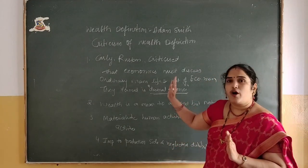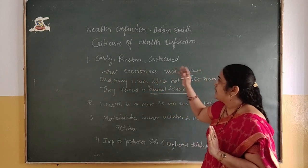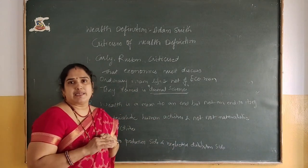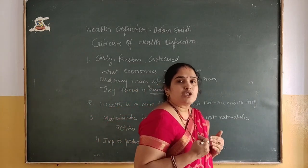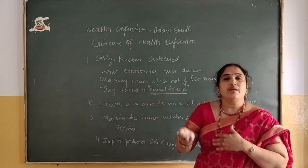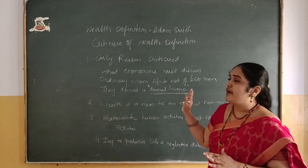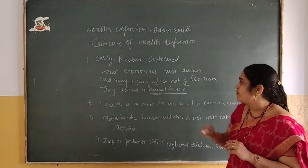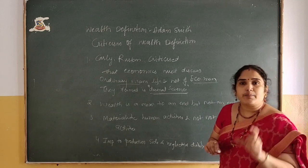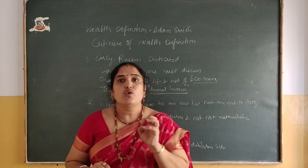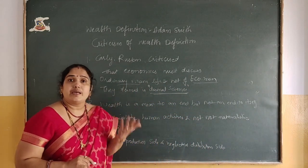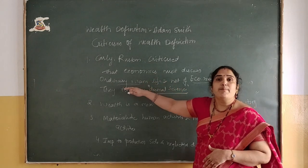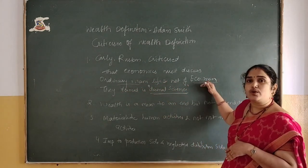This definition was criticized by Carlyle, Ruskin, and others, who said that it is not only about goods produced — they argued it discussed only the economic man's life and neglected the ordinary man. Every person, whether engaged in economic activity or not, deserves consideration. Adam Smith only considered the economic man — the person who earns income and is engaged in economic activity — but there are many people who are not engaged in economic activity yet are consuming goods and services.